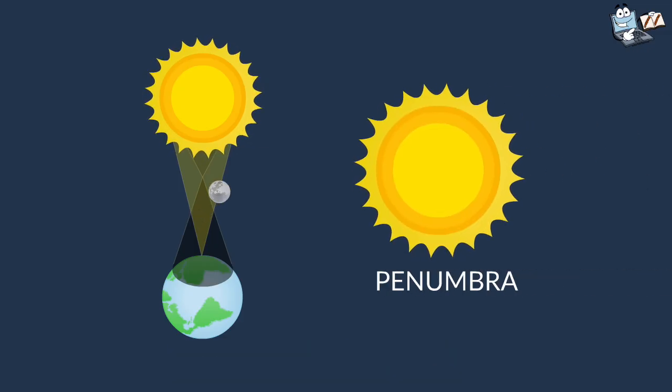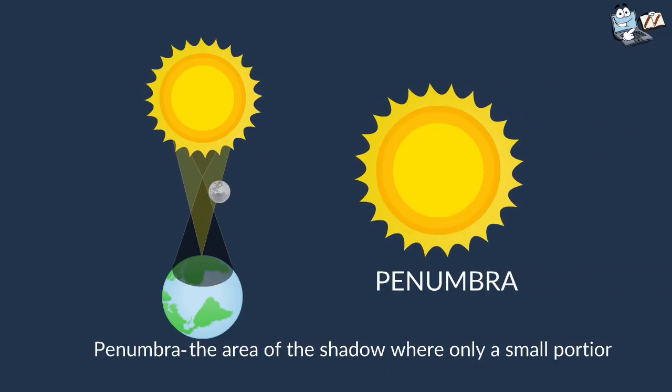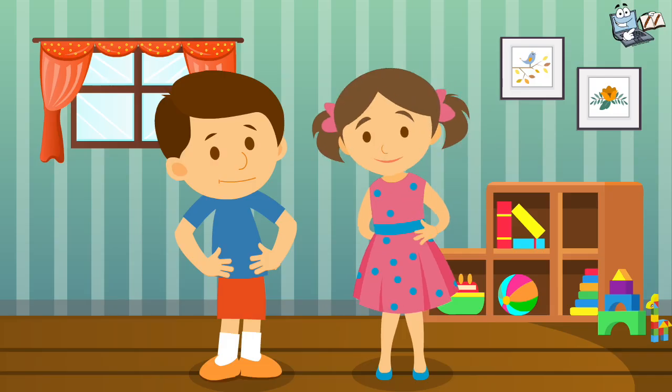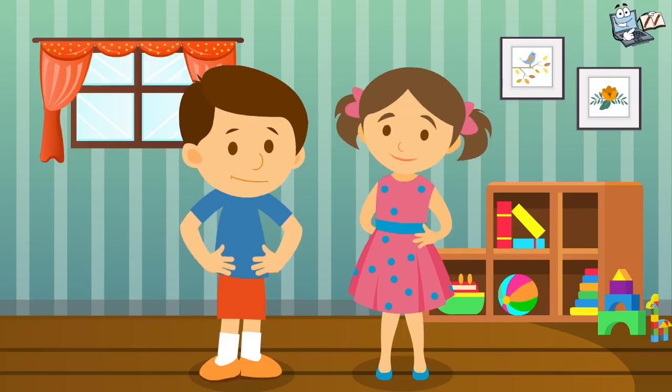Now, Penumbra. It's the area of the shadow where only a small portion of the moon is in front of the sun. Let's do a simple experiment to understand the solar eclipse better.